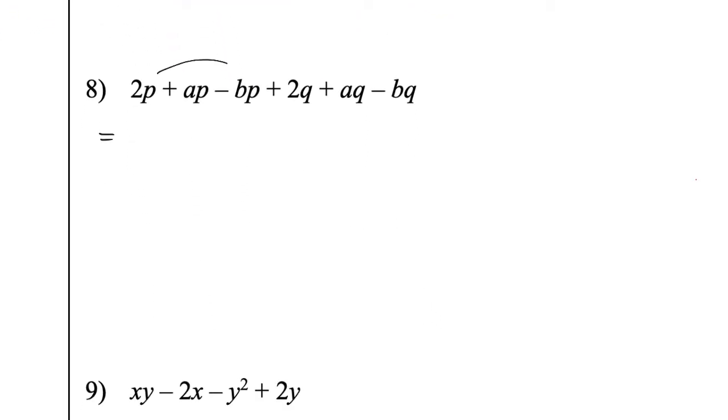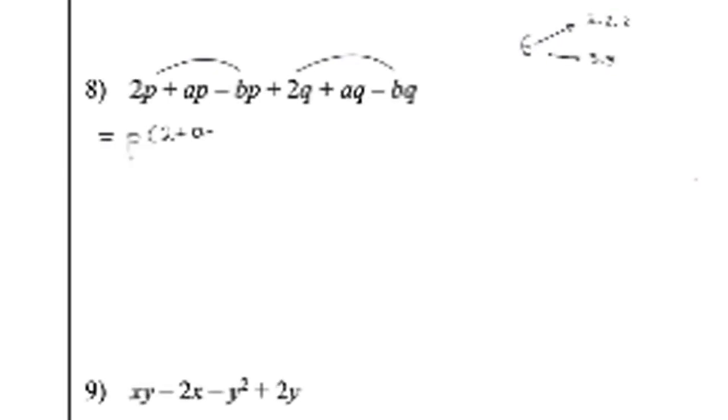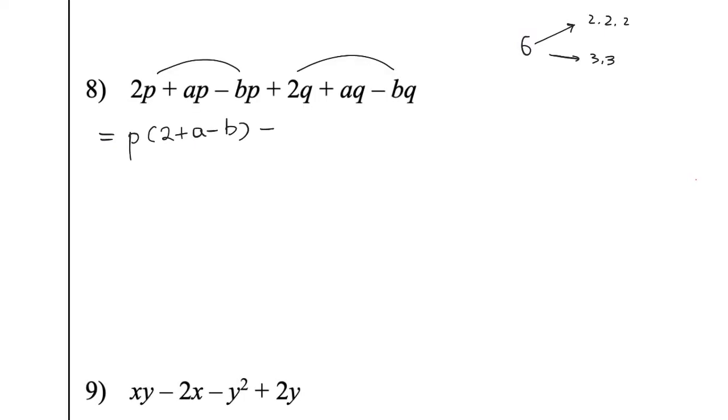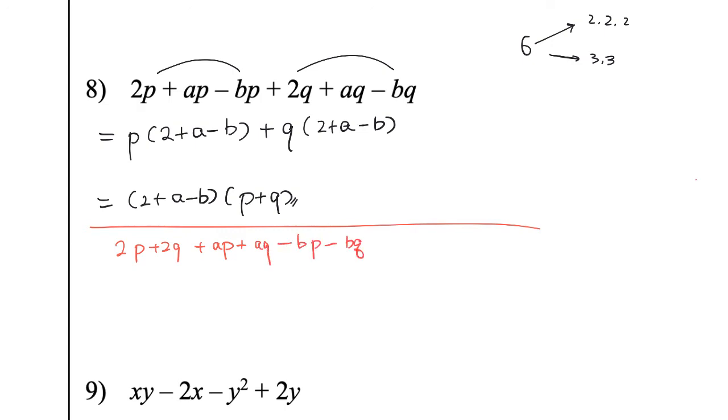And then for question eight, there could be six items. So you can have 2-2-2, or 3-3. The grouping. So I showed you the first one, 3-3. So all of them have P. So you take out 2 plus A minus B. And then for the second group, you have Q. So after that, now you can take out 2 plus A minus B. And what remains? It will be P plus Q. For another grouping, you put the A terms, B terms, and constant terms together respectively. So you have this arrangement. Just make sure you do not make some mistake in the sign. So you have 2 plus A minus B.